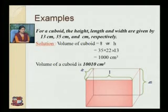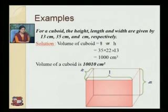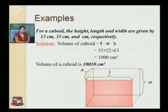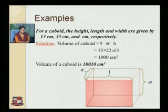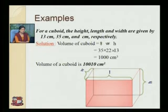For a cuboid, the height, length, and width are given as 13 cm, 35 cm, and 13 cm. Volume of the cuboid is given by L into W into H, where L is length, W is width, and H is height. Therefore, volume equals 10,010 cm cubed.